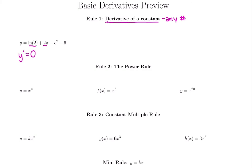2π is another different-looking constant. π is a button on your calculator, just like ln was. 2π is going to be a number and the derivative of that number is 0. Same thing with negative e squared — e represents another irrational number on your calculator. The derivative of every number is 0, so derivative of 6 is 0. As long as it doesn't have an x on it, the derivative is going to be 0.